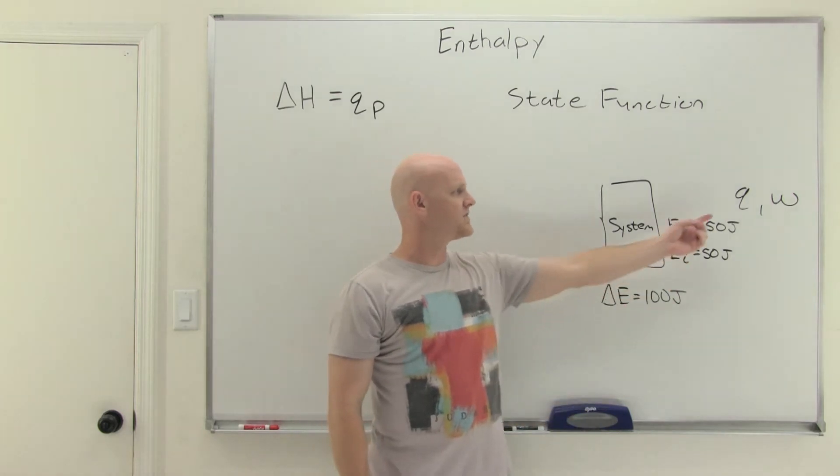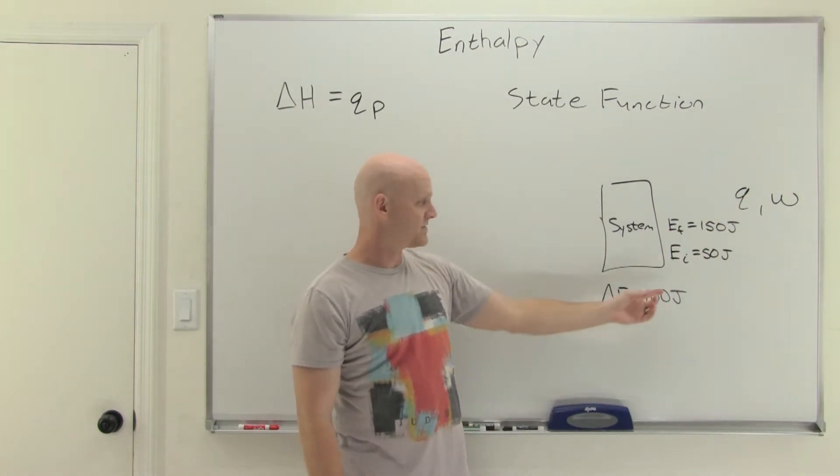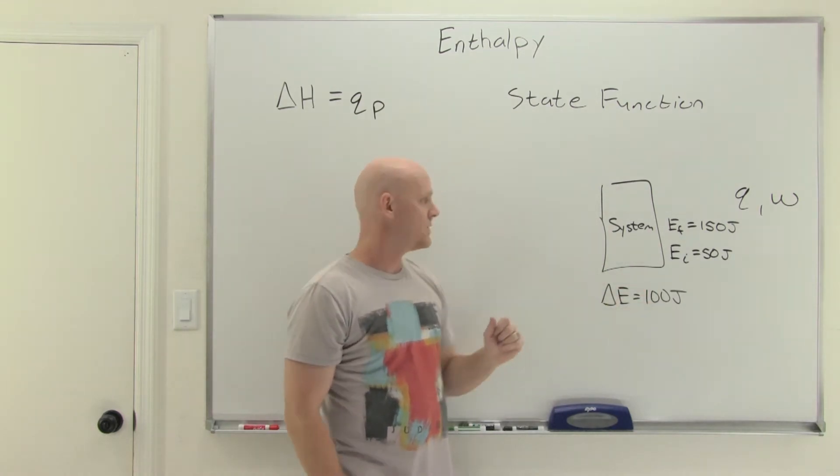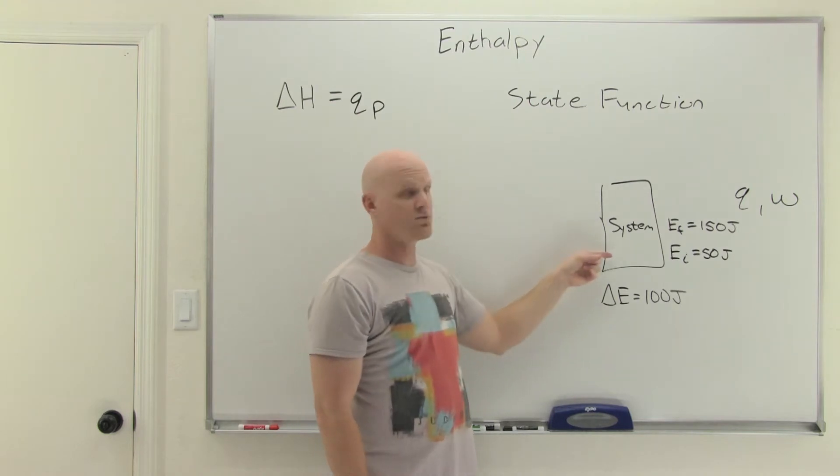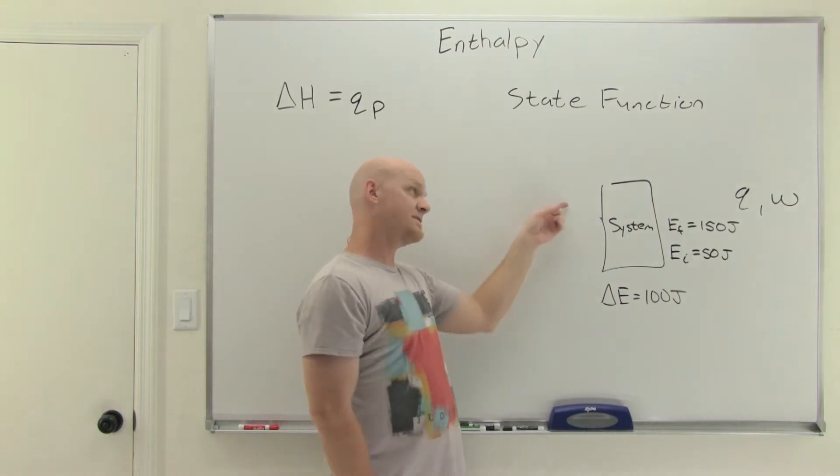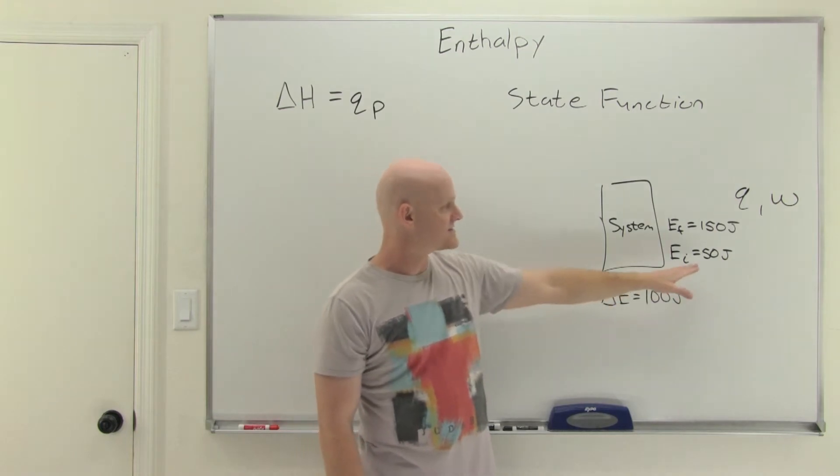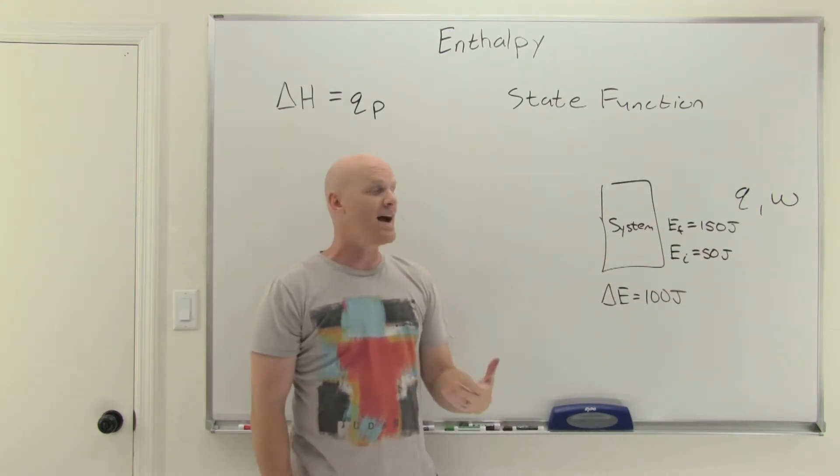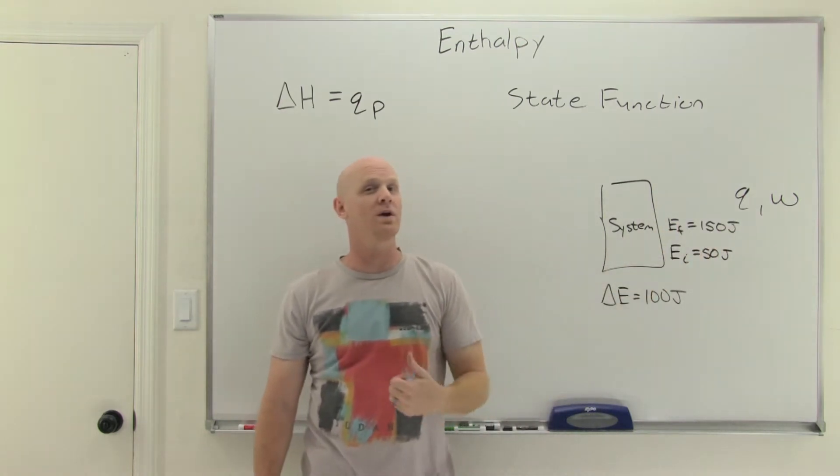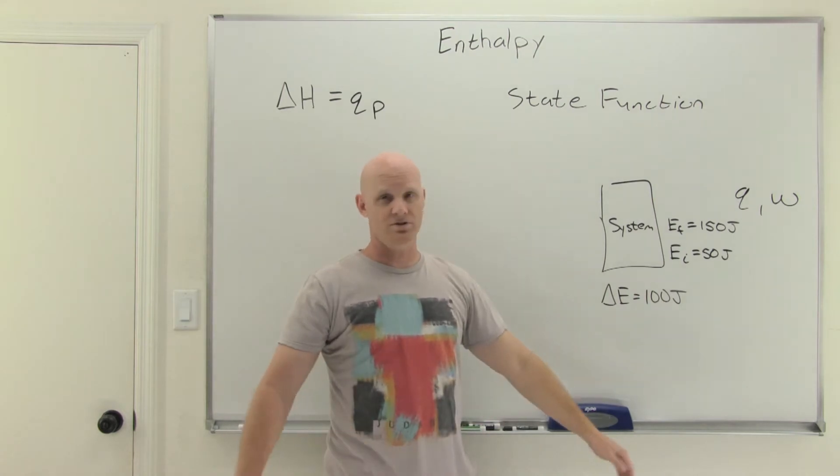Problem is, it would not be enough to calculate either Q or W because we could get here - this just means that 100 joules of energy was transferred into the system. That could be 100 joules of heat and no work, or 100 joules of work and no heat, or 50 joules of heat and 50 joules of work, or 75 heat and 25 work. There are a lot of different pathways possible to get to this net result from this initial state to this final state. That's why these are not state functions. They totally depend on what pathway you take.